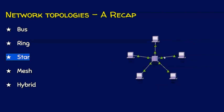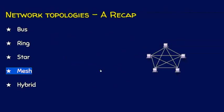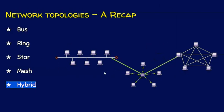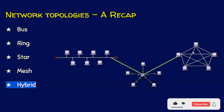In star topology, we will have a central node — maybe a switch or a hub — and each device will be connected to the central node. In mesh topology, every pair of nodes will have a dedicated line; every node will be connected with all other nodes through a dedicated link. A hybrid topology is a combination of one or more topologies — for example, a bus topology connected to a star topology, which is in turn connected to a mesh topology.